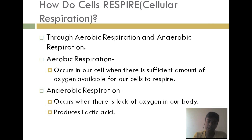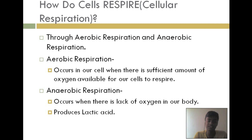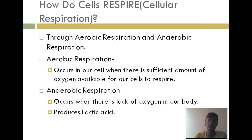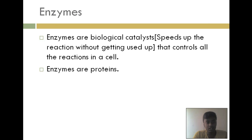Every cell goes through respiration. Animal cells go through both aerobic and anaerobic respiration, but plants rarely go through anaerobic respiration because they don't move. Aerobic respiration occurs when there is a sufficient amount of oxygen, while anaerobic respiration occurs when there is a lack of oxygen in the body.